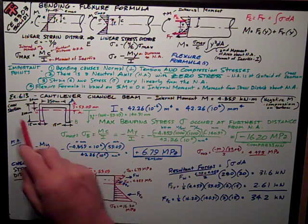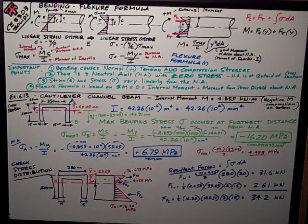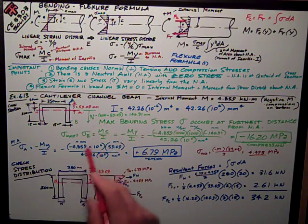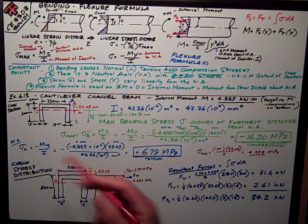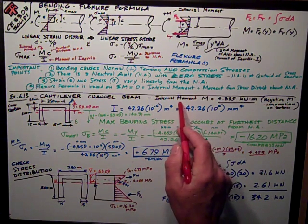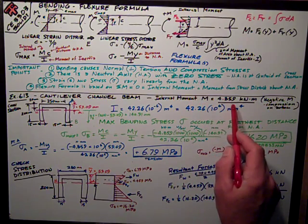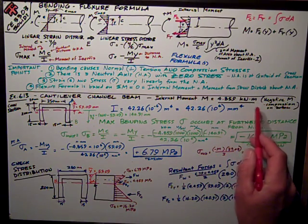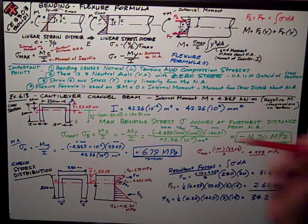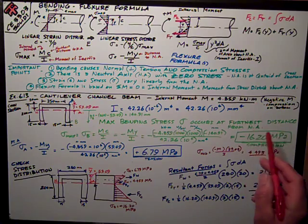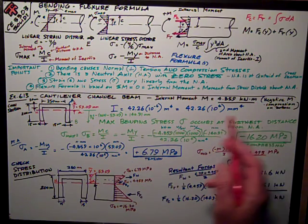It's easy to show this on an example. I've taken this from 6.13 in the book, where they have a cantilever channel beam. They show the cantilever, and they calculate the internal moment is equal to 4.859 kilonewton meters. It's a cantilever, so it's a negative moment. It causes compression on the bottom, and we'll talk about that here in a second, too.